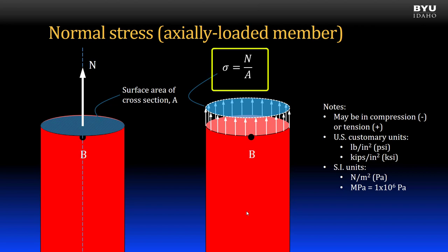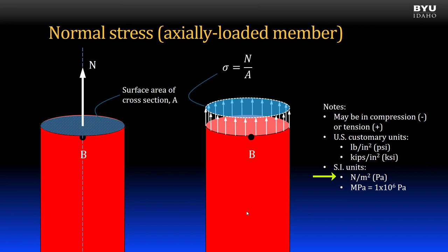Normal stress sigma may be in compression or tension. We show compression with a negative sign and tension with a positive sign. In U.S. customary units, stress is in pounds per square inch (psi) or kips per square inch (ksi). In the international system, units are newtons per meter squared; one newton per meter squared is one pascal, and a more useful unit for stress is megapascals (MPa), or one million pascals.